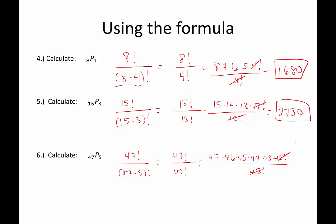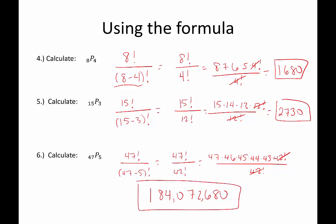That gives us the huge number 184,072,680. Good thing we used a calculator. You notice with permutations you always want this R value to be somewhat small, because could you imagine if it was 47 permuted 42 ways? You'd have to do 47 times 46 times 45 times 44 times 43 all the way down to 6. That would be a mess.